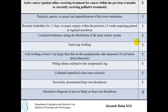Localized tenderness along the distribution of the deep venous system — one point. Entire leg swelling — one point. Calf swelling at least three centimeters larger than the asymptomatic side, measured 10 centimeters below the tibial tuberosity. When one leg is swollen, we compare it with the other asymptomatic leg — one point. Pitting edema confined to the symptomatic leg — one point.